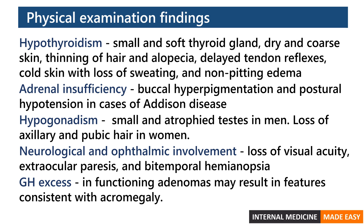Hypothyroidism manifests as a small and soft thyroid gland, dry and coarse skin, thinning of hair and alopecia, delayed tendon reflexes, cold skin with loss of sweating, and non-pitting edema. Adrenal insufficiency manifests as buccal hyperpigmentation and postural hypotension in cases of Addison's disease. Hypogonadism manifests as small and atrophic testes in men, and there may be loss of axillary and pubic hair in women. Neurological and ophthalmic involvement manifests as loss of visual acuity, extraocular paresis, and bitemporal hemianopsia. In cases of growth hormone excess, functioning adenomas may result in features consistent with acromegaly.